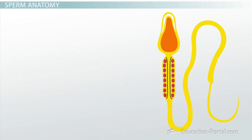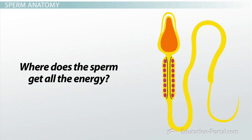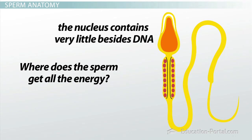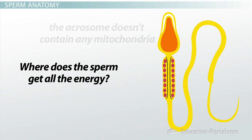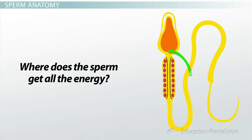You may be wondering where the sperm cell gets the energy to whip a long flagellum back and forth so vigorously. After all, the nucleus contains very little besides DNA, and the acrosome doesn't contain any mitochondria to provide energy. That just leaves the flagellum itself. Sure enough, a portion of the flagellum right here is surrounded by mitochondria that provide the ATP that powers the whipping motion.